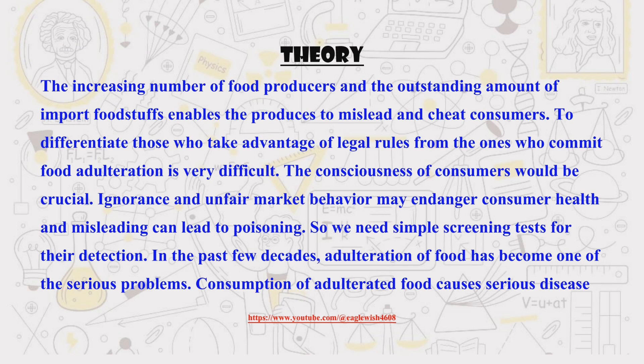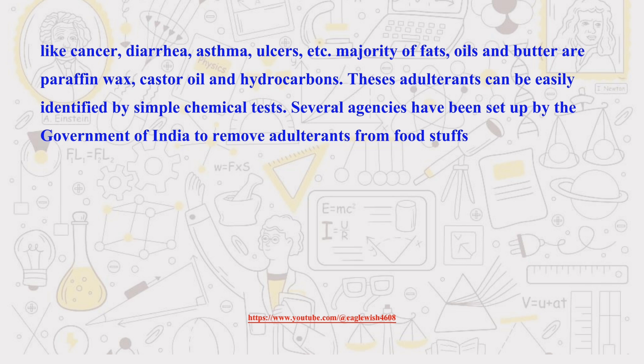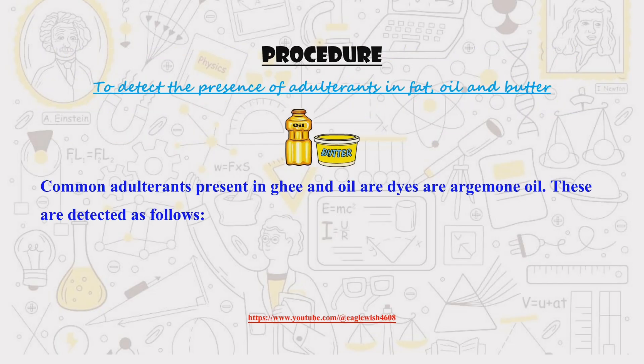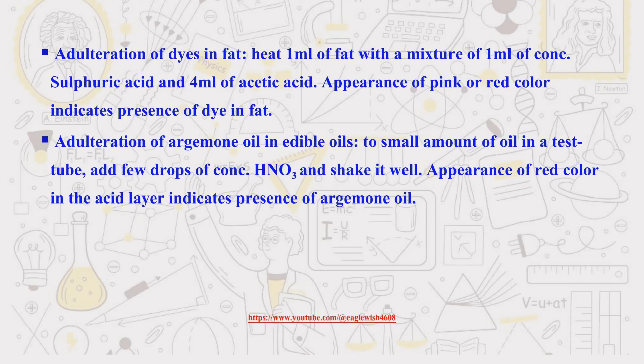Before we dive into the procedures, let's first review the theoretical portion of our project. Now, let's get to the heart of the project — the procedures. We'll start with detecting adulterants in ghee, oil, and butter. Each step will be clearly explained.